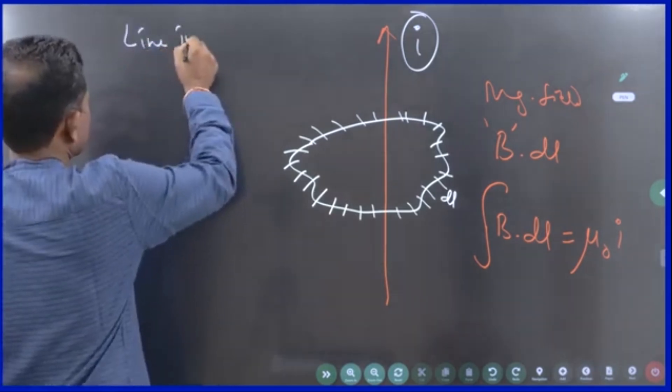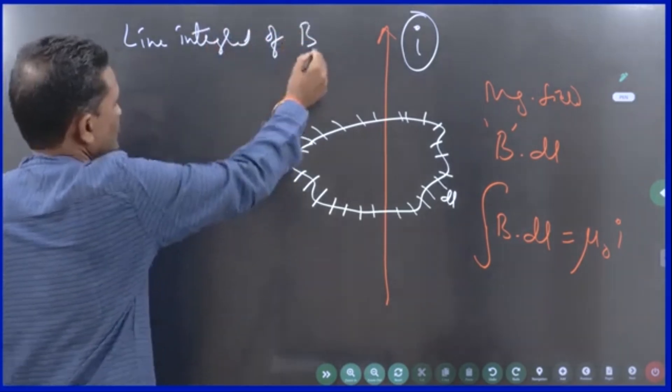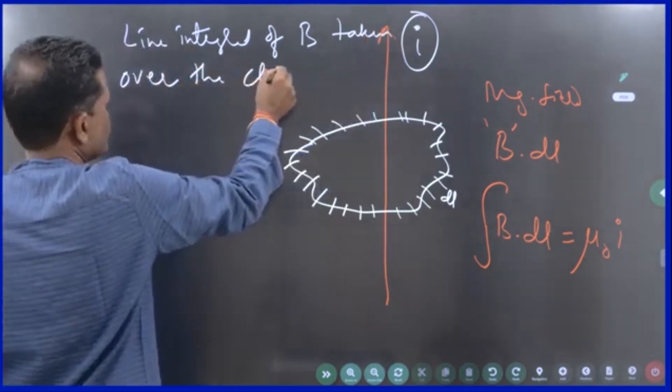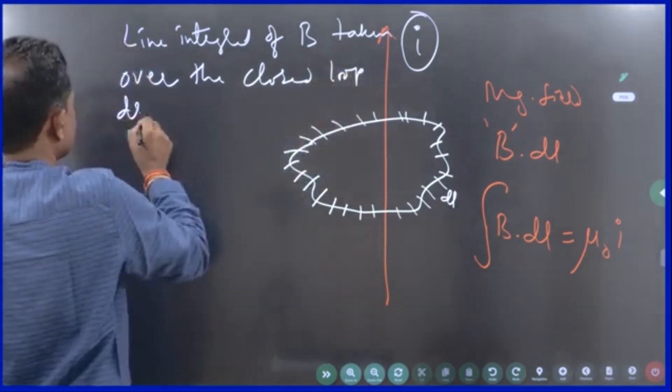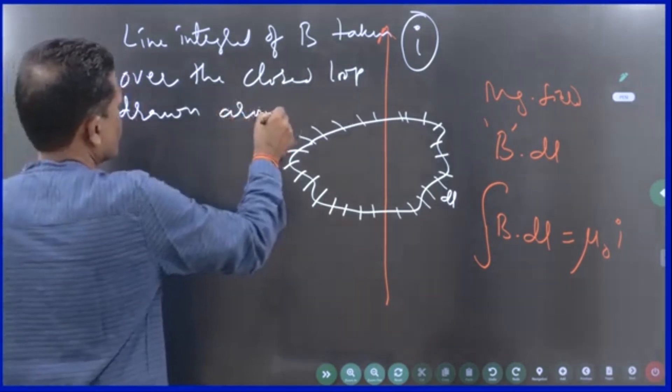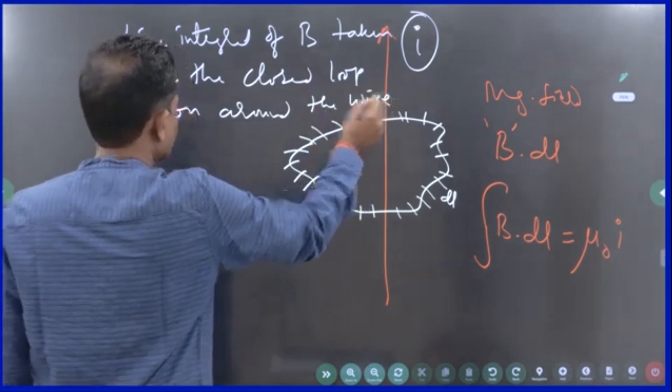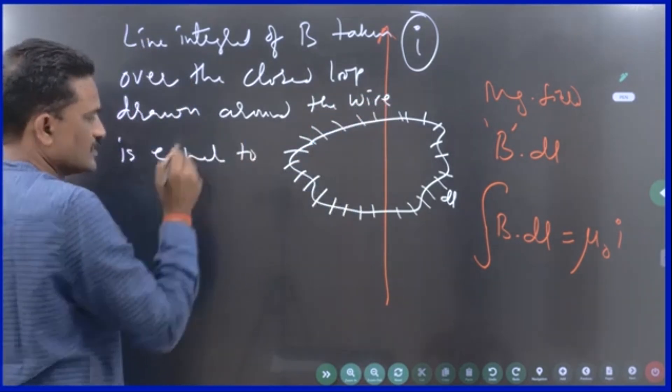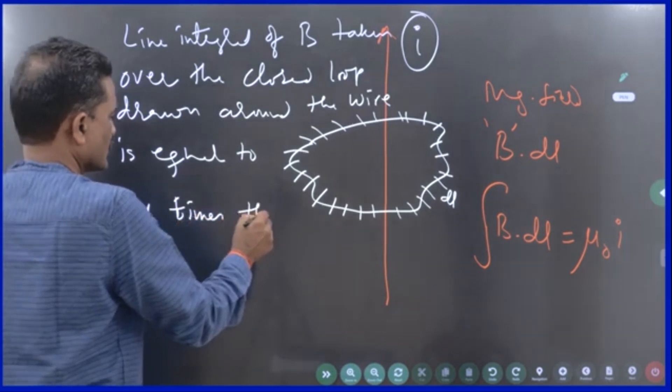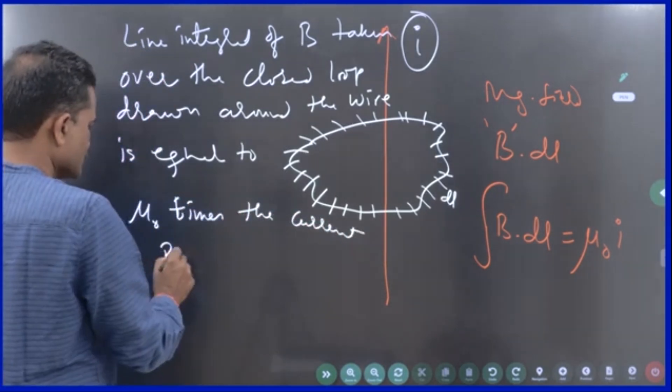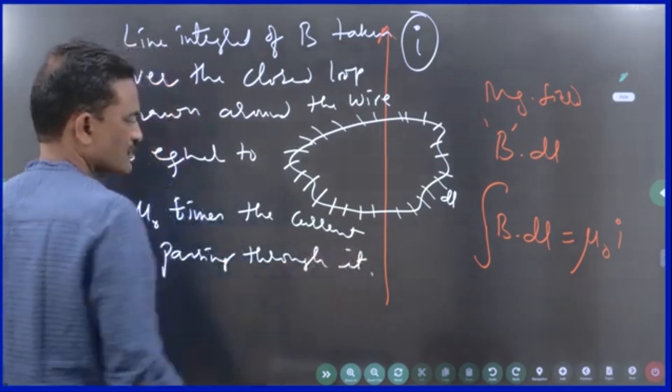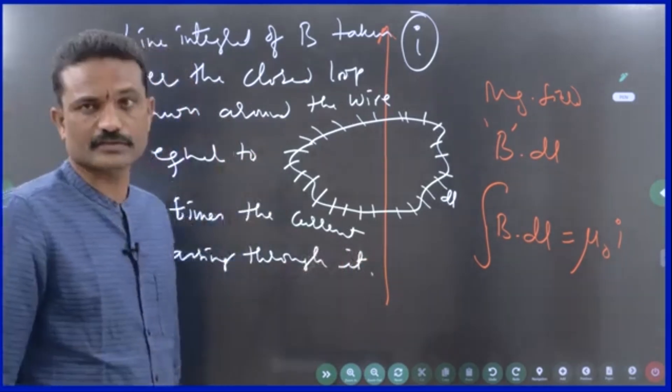Line integral of b taken over the closed loop drawn around the wire is equal to mu naught times the current passing through it. That is all. If you write this, you will be getting one mark. Actually, it is a formal expression.